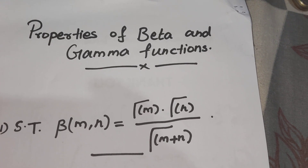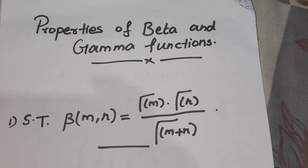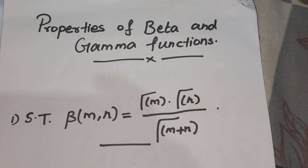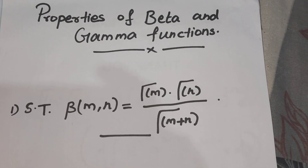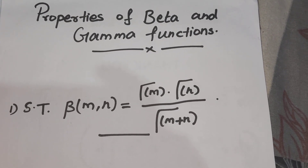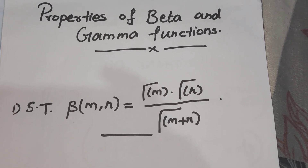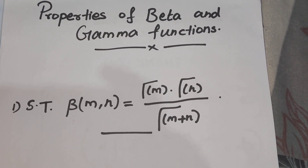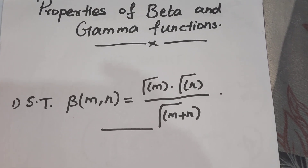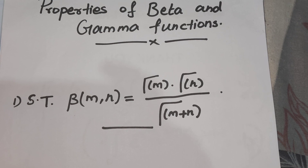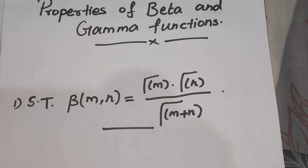Hi all, welcome to Ajis Academy. Today we are going to learn about properties of beta and gamma functions. Property number one: show that beta of (m,n) is equal to gamma of m into gamma of n divided by gamma of m plus n. This property is also known as the relation connecting beta and gamma functions, and is very useful to solve problems. Let us see how to prove this property.